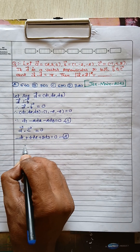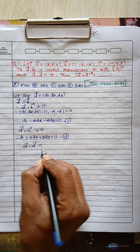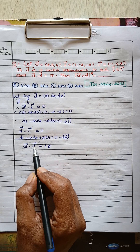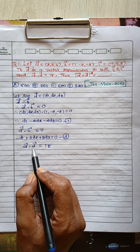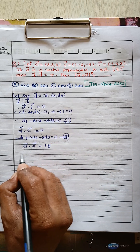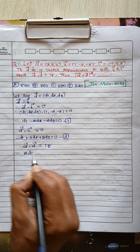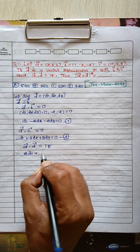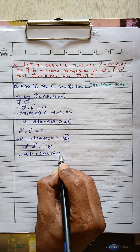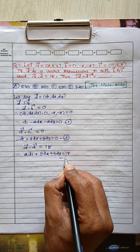The third condition is vector a dot vector d equals 18. By taking the dot product of these two vectors, we get our third equation: 2d1 plus 3d2 plus 4d3 equals 18. This is Equation 3.